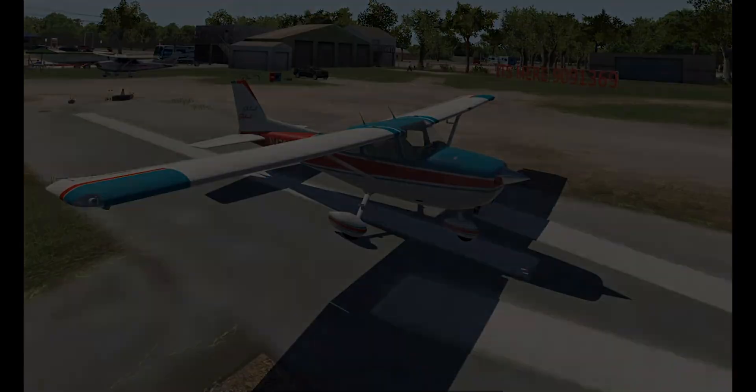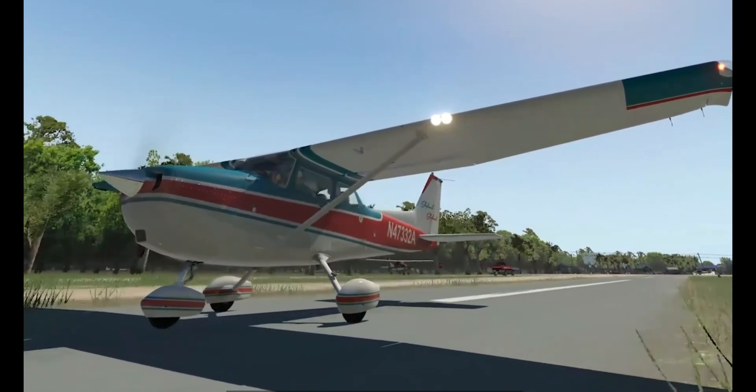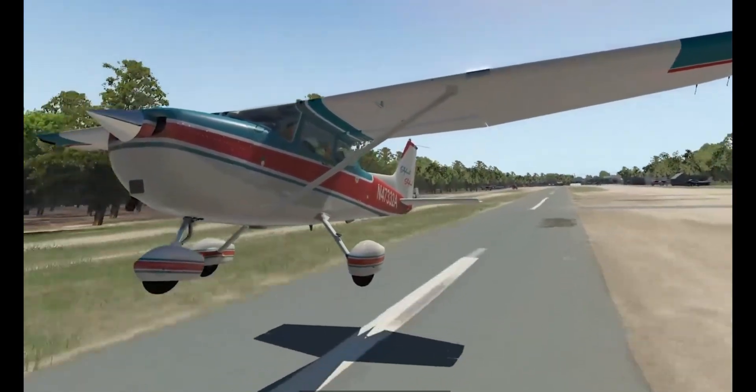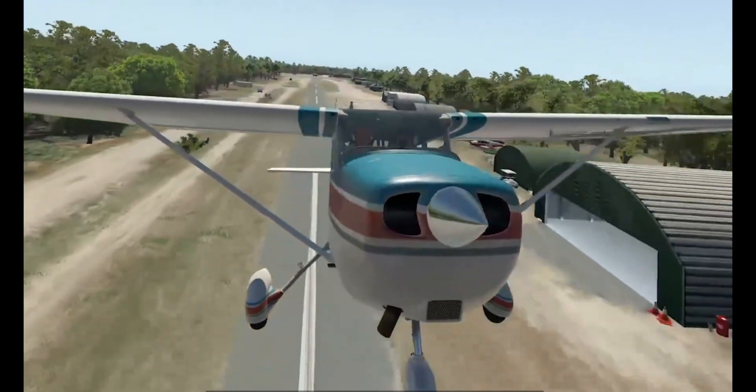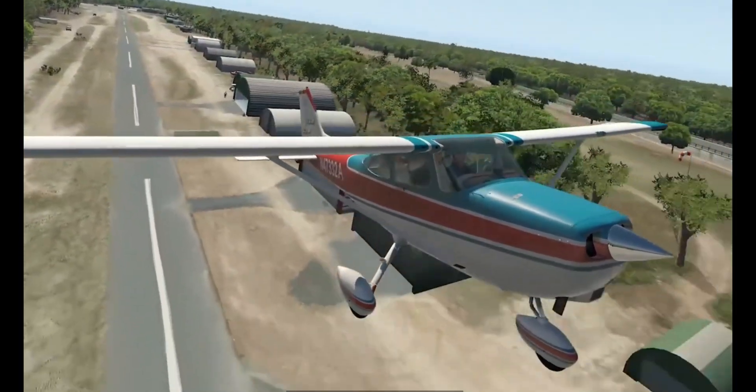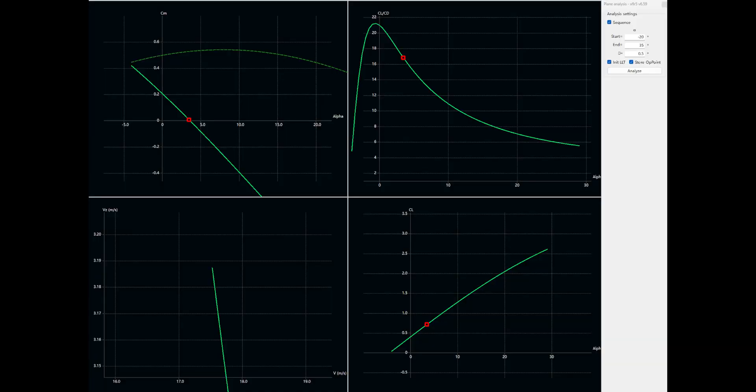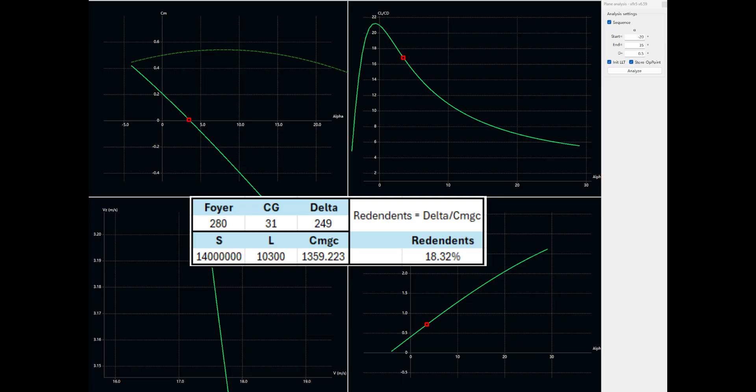Next, we further optimize the overall wing configuration, checking stability and improving flight performance. After entering the weight data, the center of gravity is located about 31 mm from the wing's leading edge. Using the point where the CMHo alpha slope approaches zero, the aerodynamic center is found to be roughly 280 mm from the wing's leading edge. This gives a static margin of about 18% of the MAC, mean aerodynamic cord, ensuring stability while retaining a certain level of maneuverability.